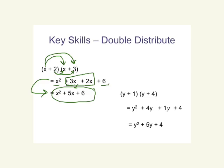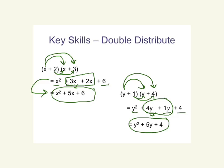One more example of the double distributive method: (y + 1)(y + 4). We take the first binomial and distribute into the second: y times y gives y squared, y times 4 gives 4y. Then distribute the 1: 1 times y is 1y, 1 times 4 is 4. The two middle terms are like terms — 4y and 1y make 5y — so our answer is y squared plus 5y plus 4.